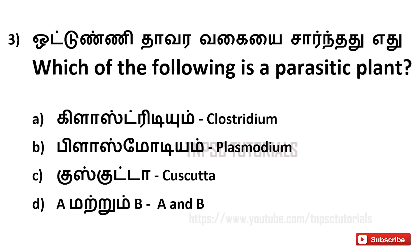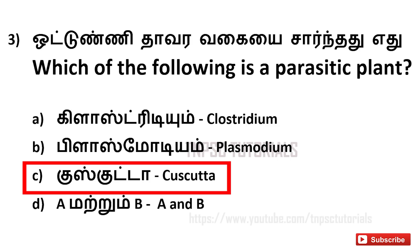Third one: Which of the following is a parasitic plant? A. Clostridium, B. Plasmodium, C. Cascuta, D. both B and C. And the answer is C. Cascuta.